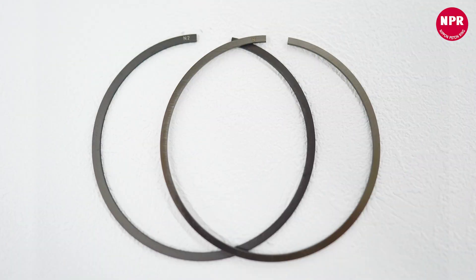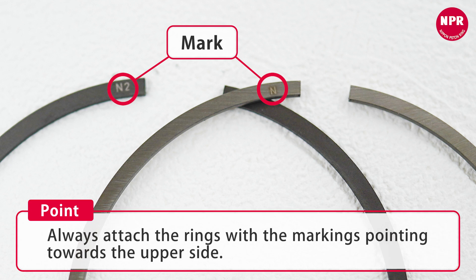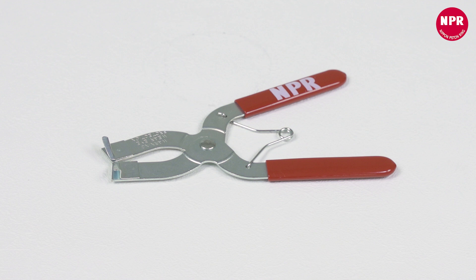Next is the attachment of the second ring and the first ring. The second ring and the first ring each have a front with an end mark and back side. Always attach the rings with the markings pointed towards the upper side. A ring tool is used to attach the rings.